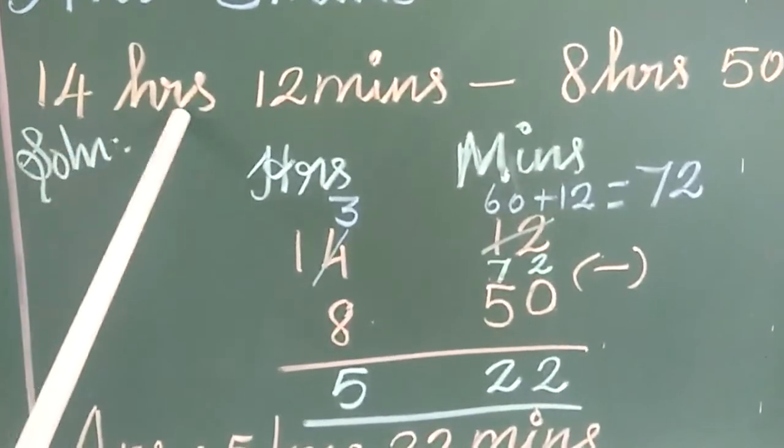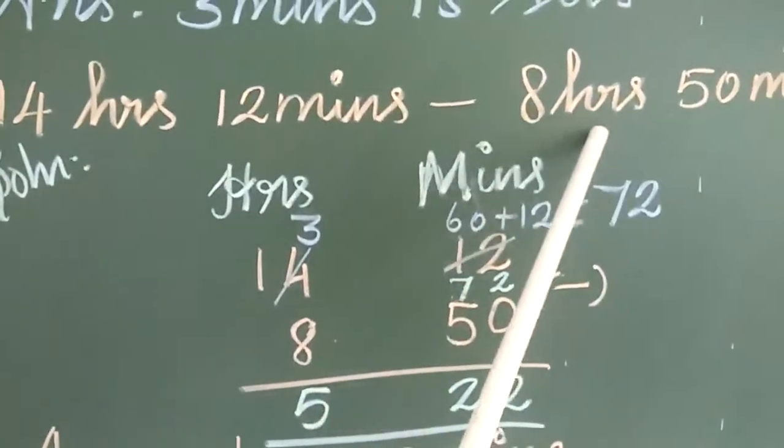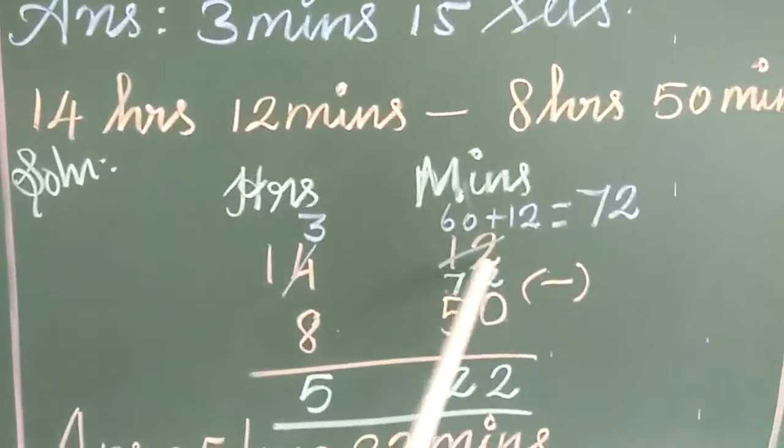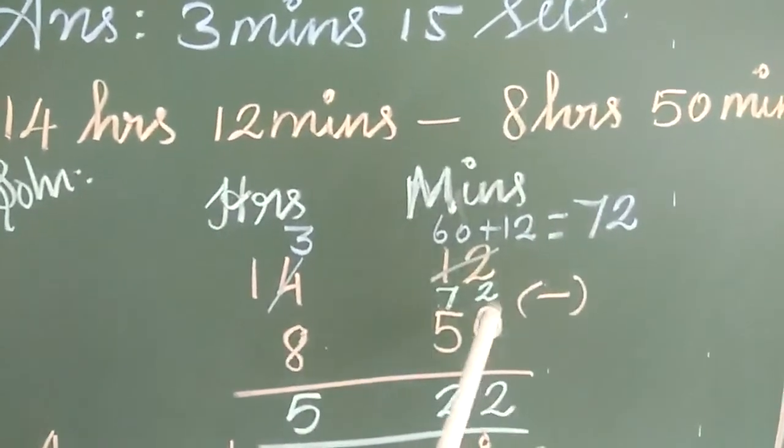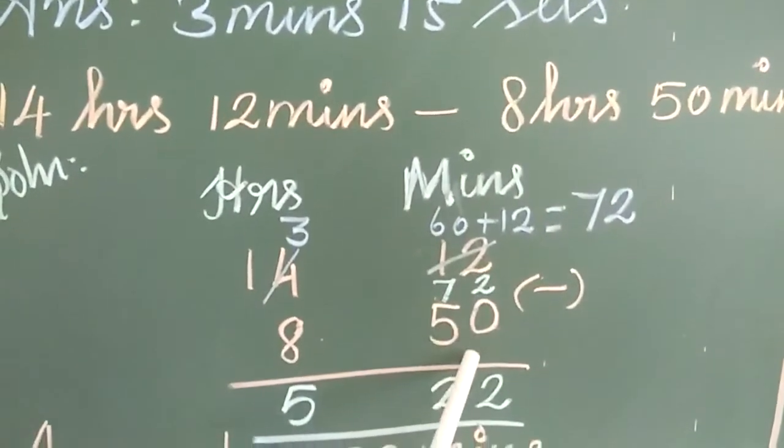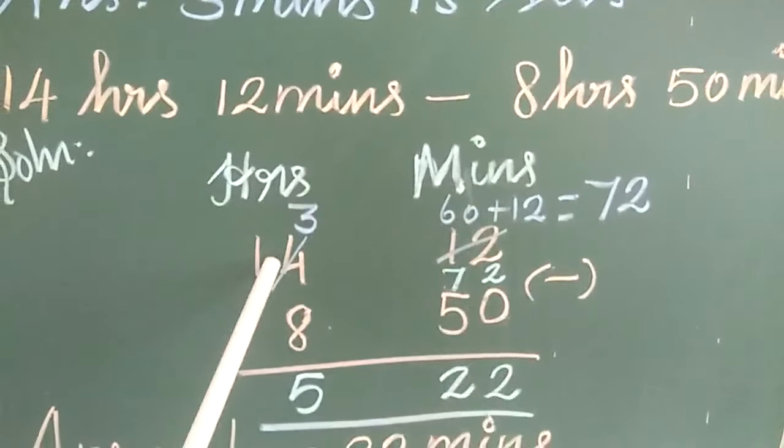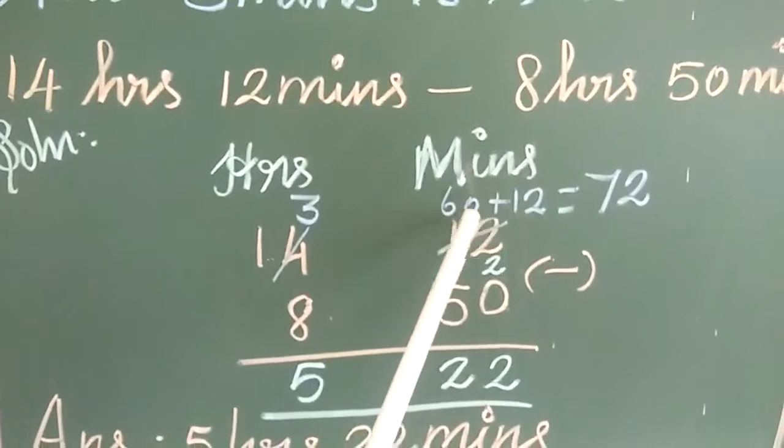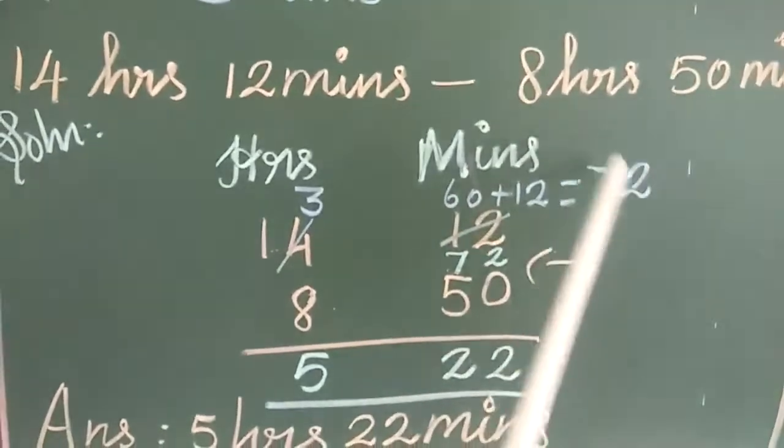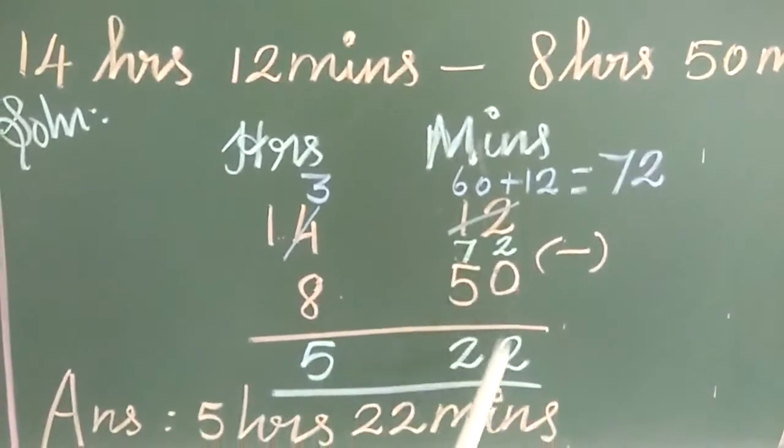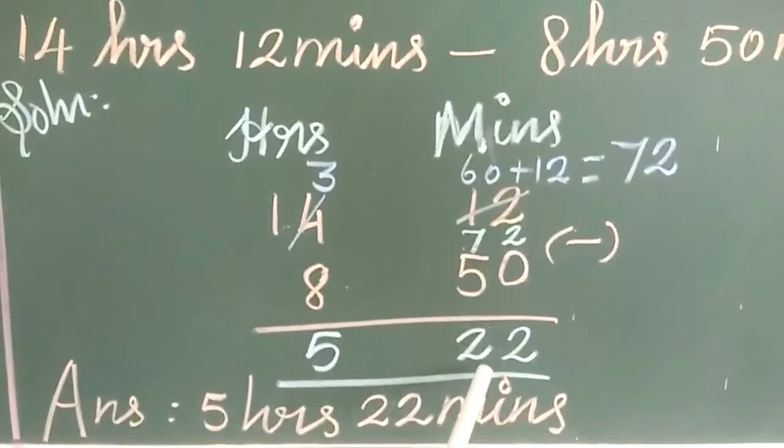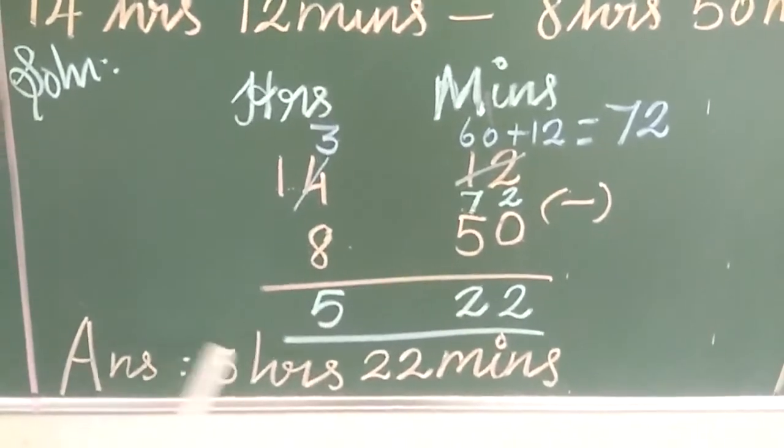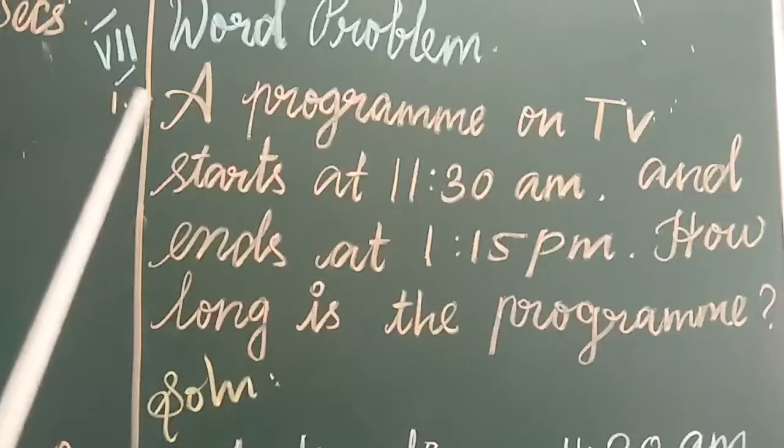Third one: 14 hours 12 minutes minus 8 hours 50 minutes. First solution: hours, minutes. 14, 12, 8, 50. 12 minutes less than 50 minutes we cannot subtract. 1 hour is equal to how many minutes? 60 minutes. So the final answer is 5 hours 22 minutes.